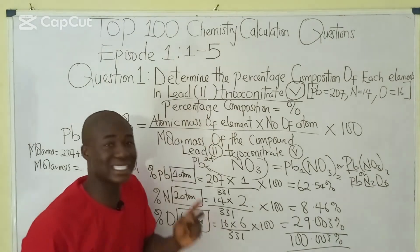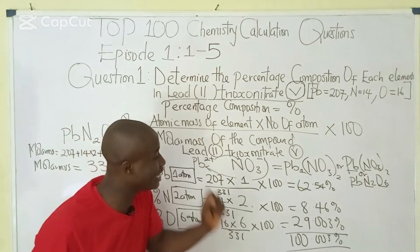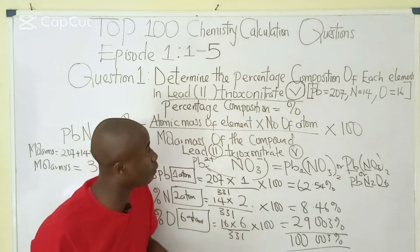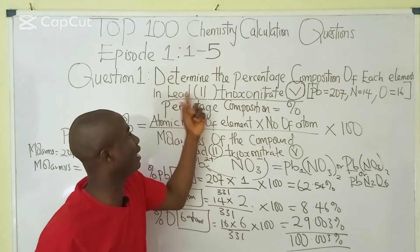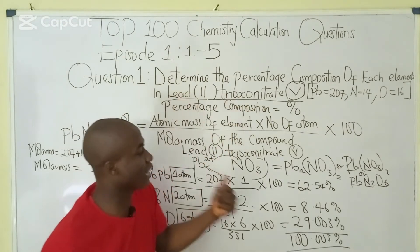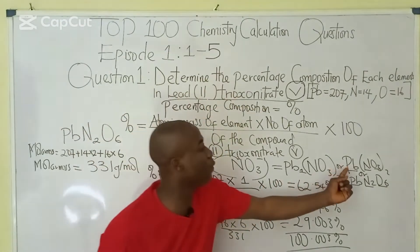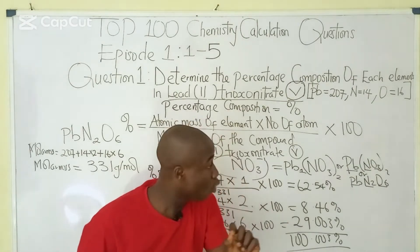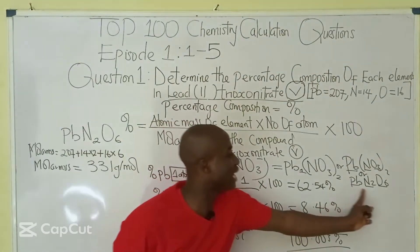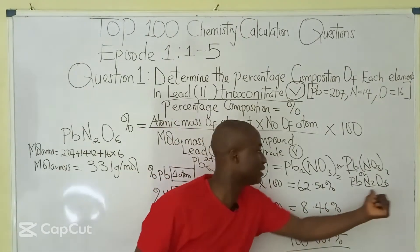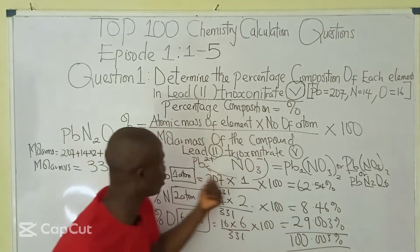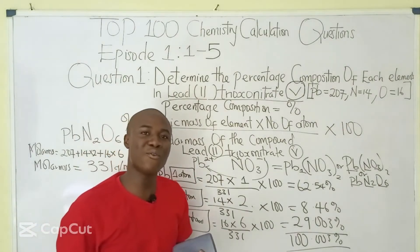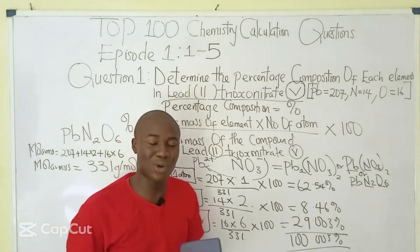These are the percentage compositions of each element making up lead(II) trioxonitrate(V), which has a chemical formula of Pb(NO₃)₂, or written in expanded form as PbN₂O₆. Writing it in expanded form makes solving much easier. Let's move over to the next question.